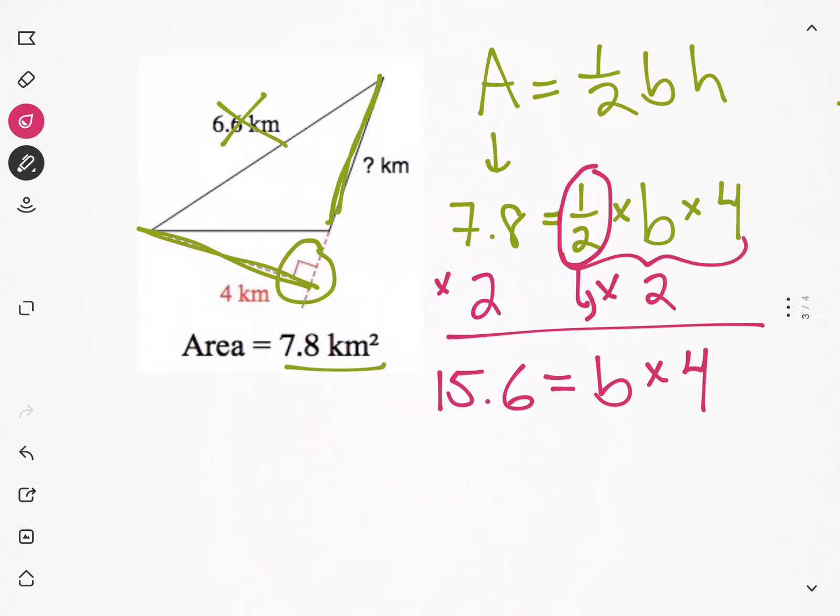Okay, then the second step, divide both sides by the height. Divide by 4. And we get that our base is 3.9 kilometers.